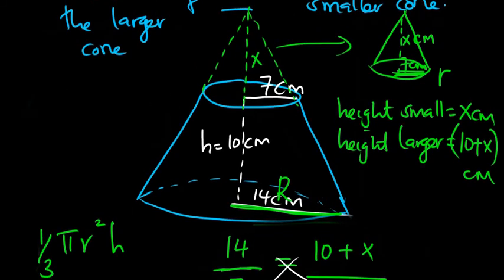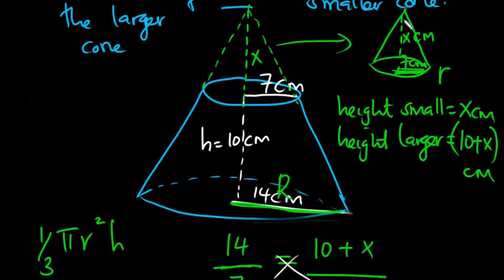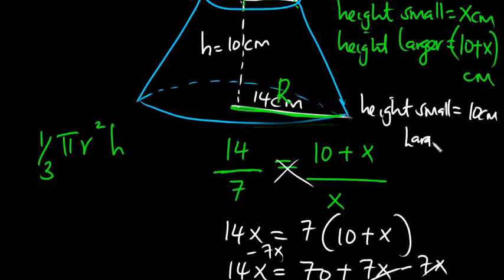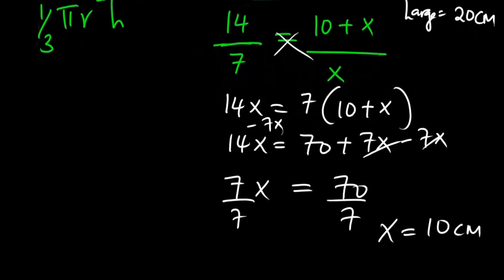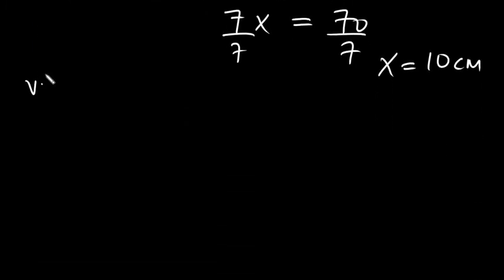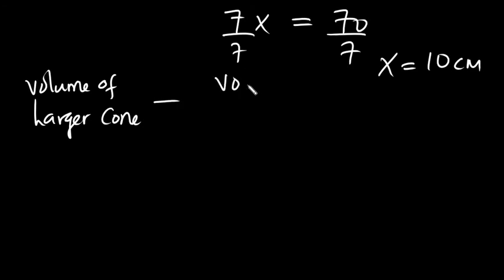So x is 10 — the height of the smaller cone is 10 centimeters, and the height of the larger cone is going to be 20 centimeters. Now we have both heights and both radii, so we can use our formula: volume of larger cone minus the volume of the smaller cone.